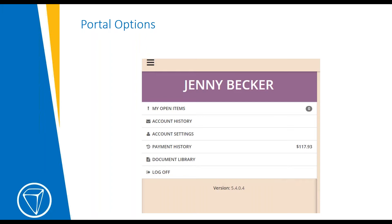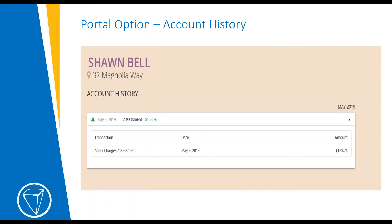The first option is account history. If you click on account history, it opens up and shows the history of any fees that were assessed or the payments that are in there, and you'll be able to look at all of that history.